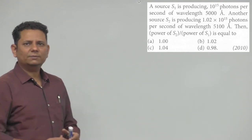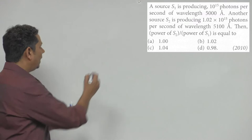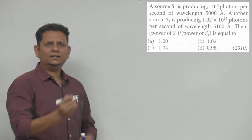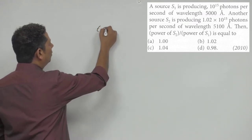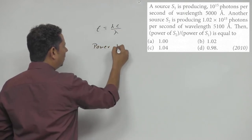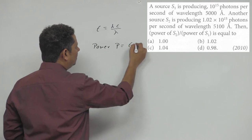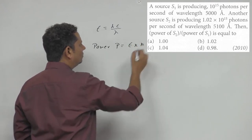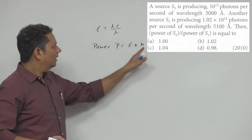Simple question - your basics should be clear. You should know that the energy of one photon is E = hc/λ. And power P is energy multiplied by the number of photons released per second.